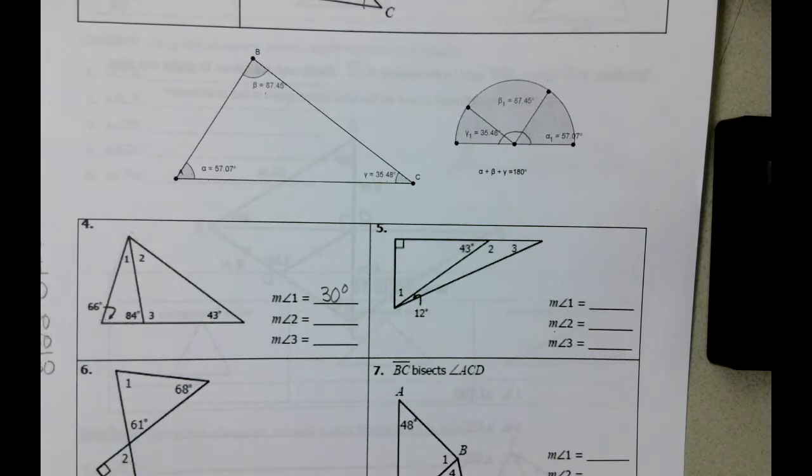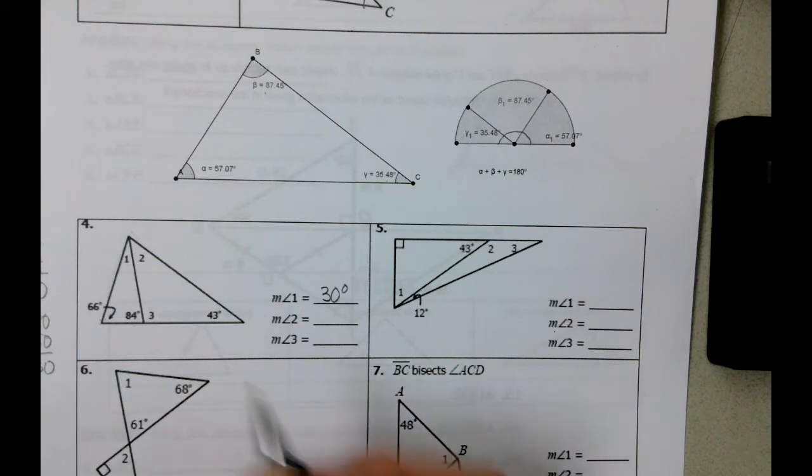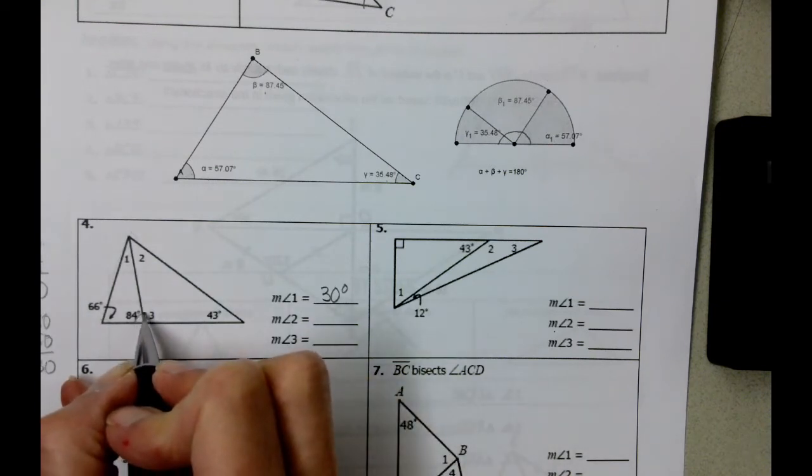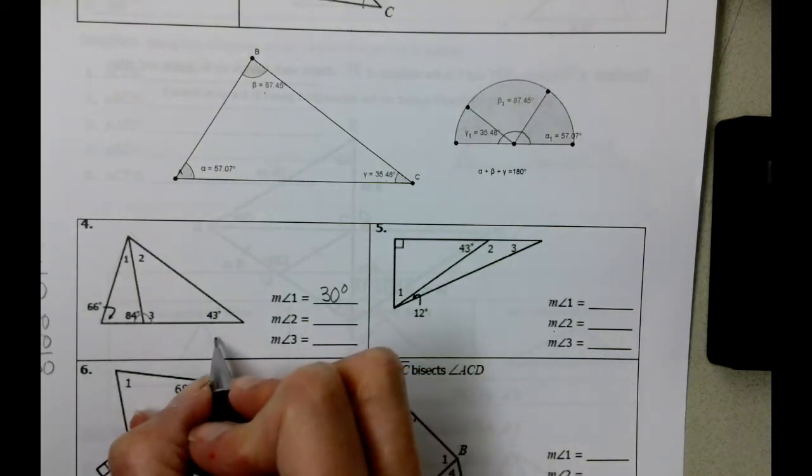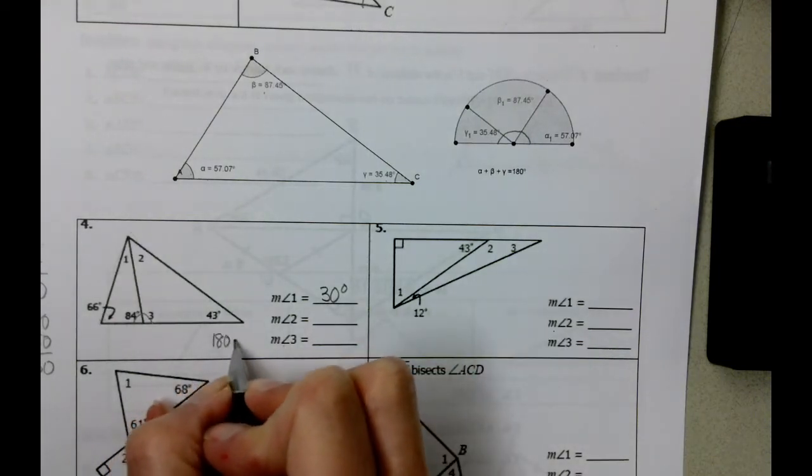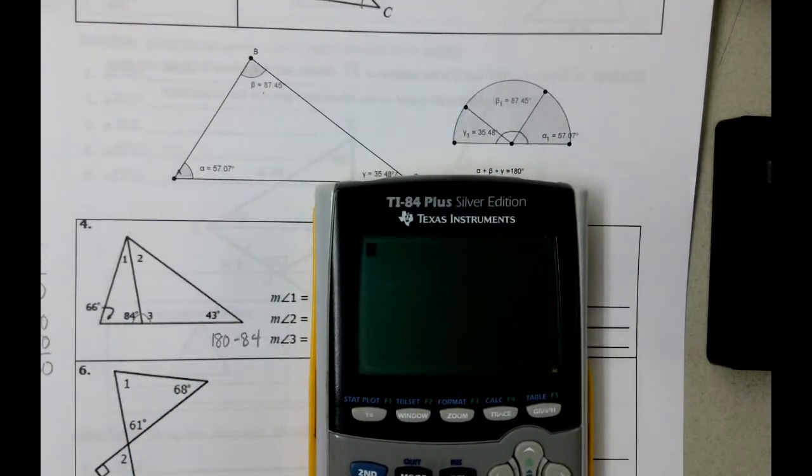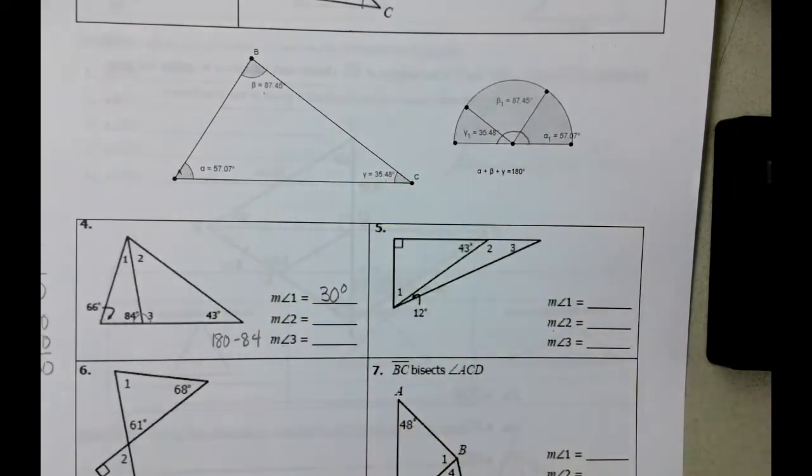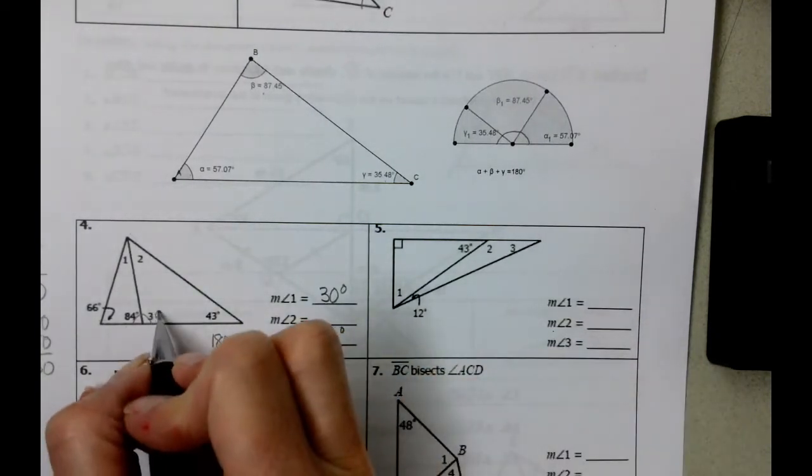Something else that we can figure out in this particular triangle is how big angle three is. Because if we take 84 and angle three, what we see is we're working with a linear pair. So if we want to figure out how big angle three is, we can take 180 minus 84. I'll just pull up the calculator here, 180 minus 84, which gives us 96 degrees. So now we know this is 96.